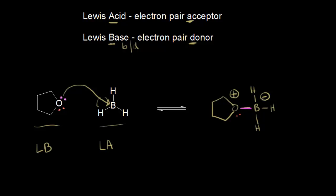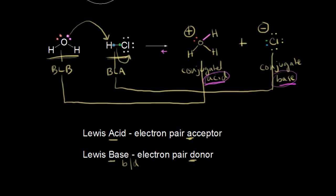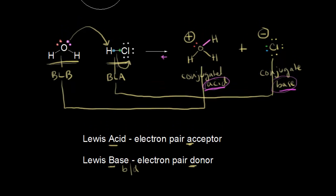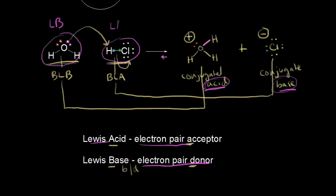The Lewis acid-base definition is more inclusive than Brønsted-Lowry. Going back to the HCl and H₂O reaction: water is donating a pair of electrons, making it a Lewis base, and HCl is accepting a pair of electrons, making it a Lewis acid. Notice it doesn't matter which definition you use—both assign the same acid and base roles to these species.